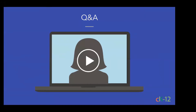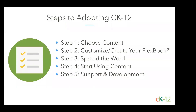Once you've decided who's involved, what your goal is, and your timeline, it's time to get started. Here are the five steps for adoption. Step one: choose your content. Step two: customize and create your flexbook. Step three: spread the word. Step four: start using the content. Step five: support and development. We're going to talk you through what we have in mind for each of these steps as you go through the adoption process.